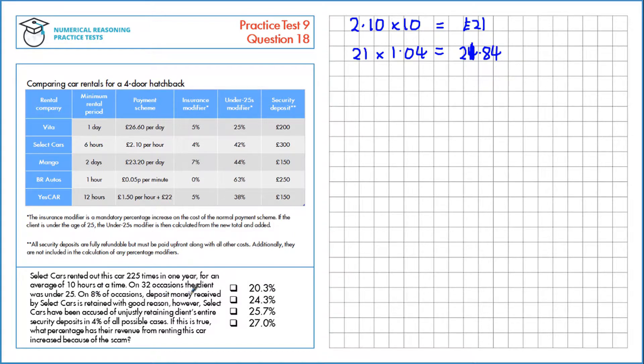On 8% of occasions, deposit money is retained with good reason, so 8% of the £300 is retained per rental. That's 0.08 times 300, which is £24 per rental. Next we have a total amount per rental, which is the sum of these two: £21.84 plus £24, which is £45.84.